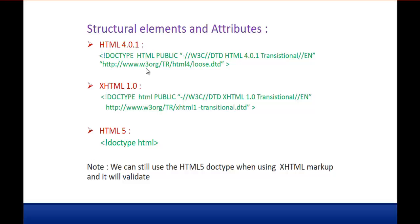In the older versions, the specification of the document type is pretty long. But in HTML5, it's pretty small — you just specify the doctype tag. Keep in mind, we can still use the HTML5 doctype when we use XHTML markup and it will validate. This doctype HTML specifies what version of HTML you are using in your webpage, so it's very important to specify this.